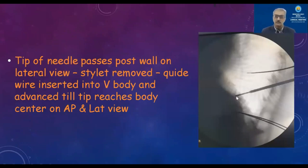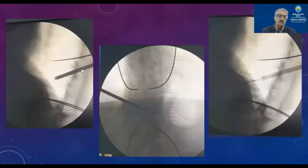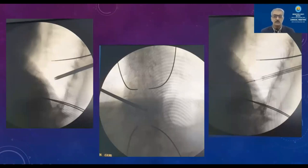Once the tip of the needle passes the posterior wall, the stylet is removed and the guide wire is placed in the center of the vertebral body, confirmed in both AP and lateral views. The cannula needle is removed and the working channel is passed over the guide wire, penetrating the posterior cortex. Through the working channel, the reamer is passed to smooth the edges of the bone so as to prevent bursting of the balloon.